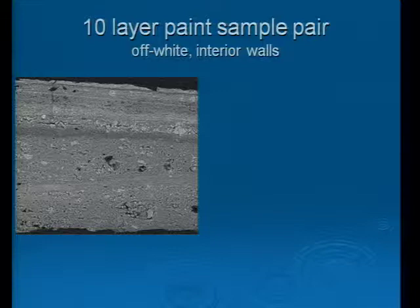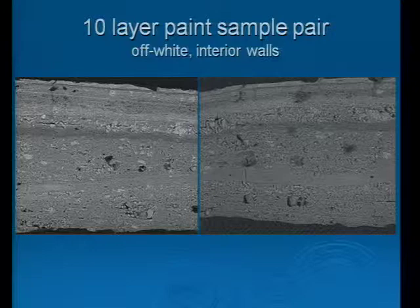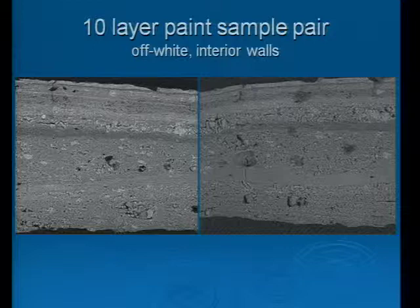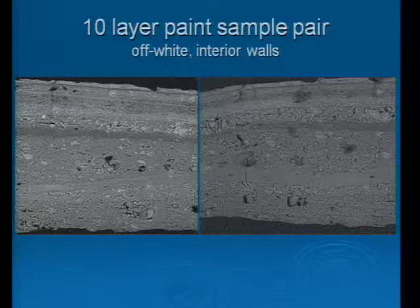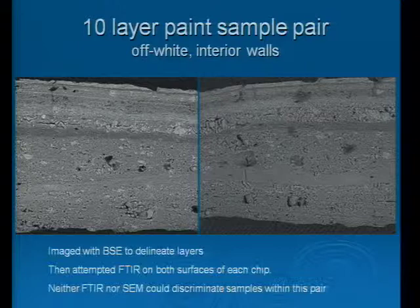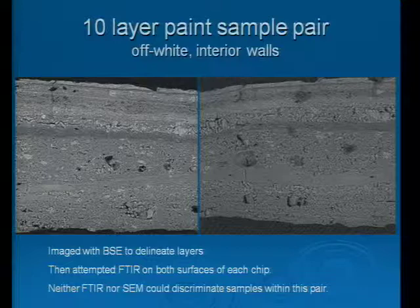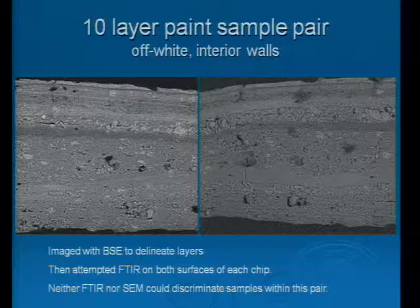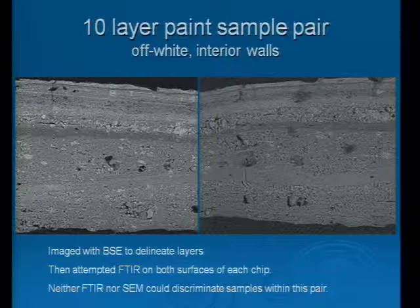This is the sample I originally talked about that we didn't want to bring forward to FTIR because we had absolutely no idea where one layer started and where one ended just based on visual microscopic assessment. So we embedded the sample and by backscatter we can see that within this pair the layer structures were comparable — there were 10 layers in the samples. Going across the screen you can see the layers looking pretty consistent. Both samples were off-white visually and from interior walls. Backscatter did delineate the layers for us, but EDS could not differentiate between the samples in any of the layers. We then performed FTIR on the top layer and the bottom layer within this pair and again there was no discrimination. So we considered this pair undifferentiated and did not bring it forward to pyrolysis.